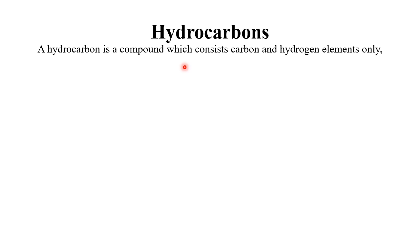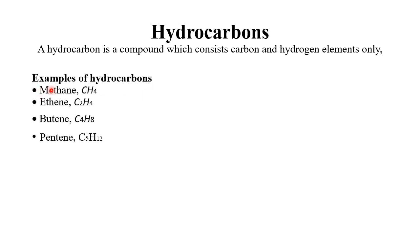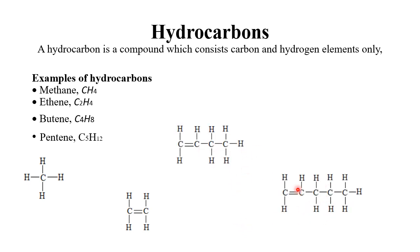Now we go to hydrocarbons. What is a hydrocarbon? A hydrocarbon is simply a compound which consists of carbon and hydrogen elements only — 'hydro' for hydrogen, 'carbon' for carbon. A hydrocarbon should only contain carbon and hydrogen in its structure. Examples include methane, ethene, butene, and pentene.